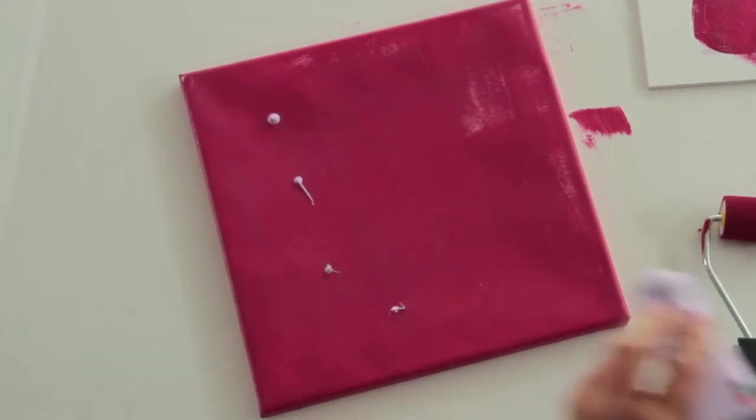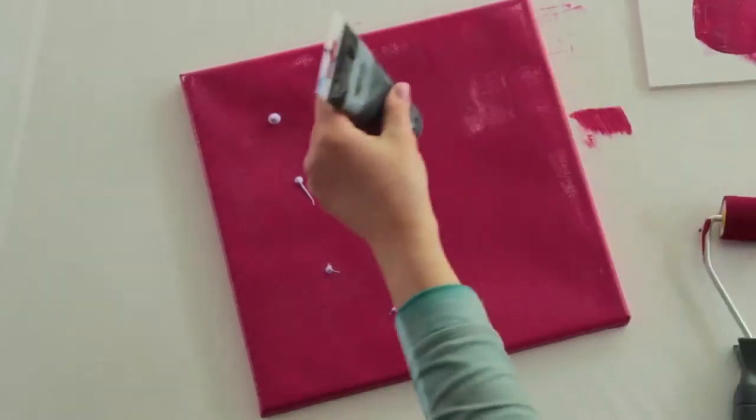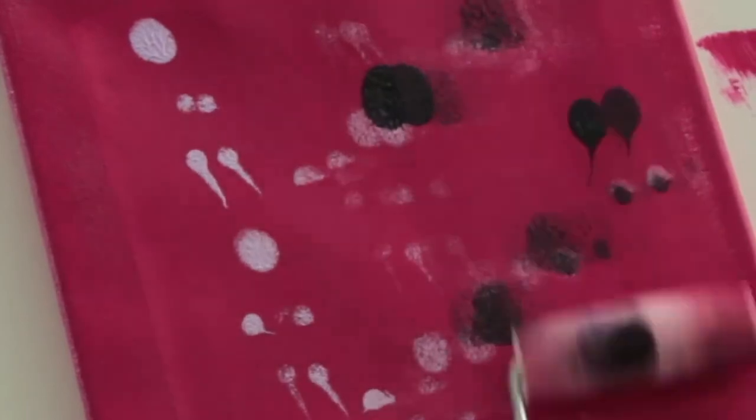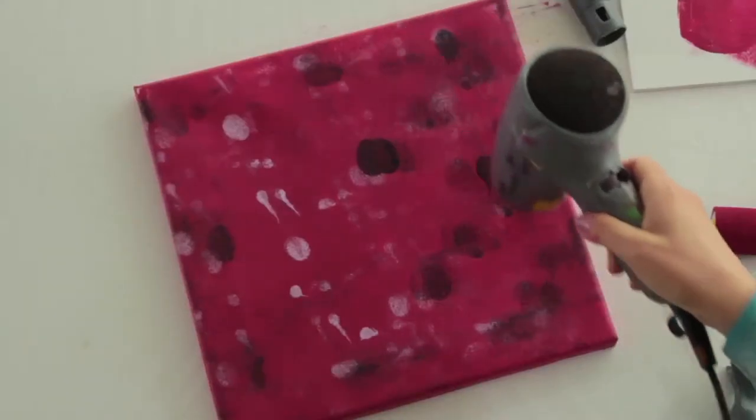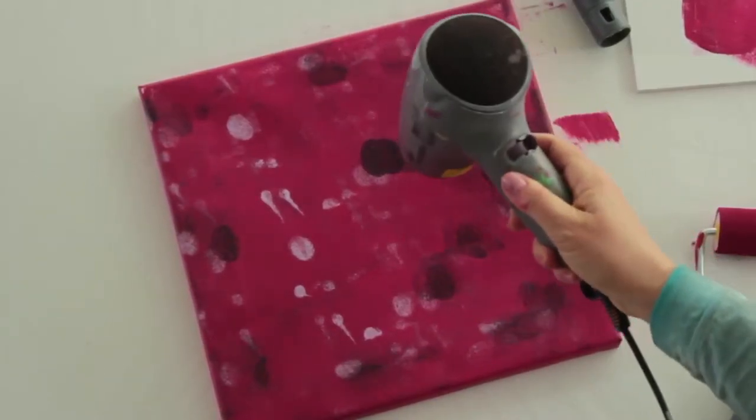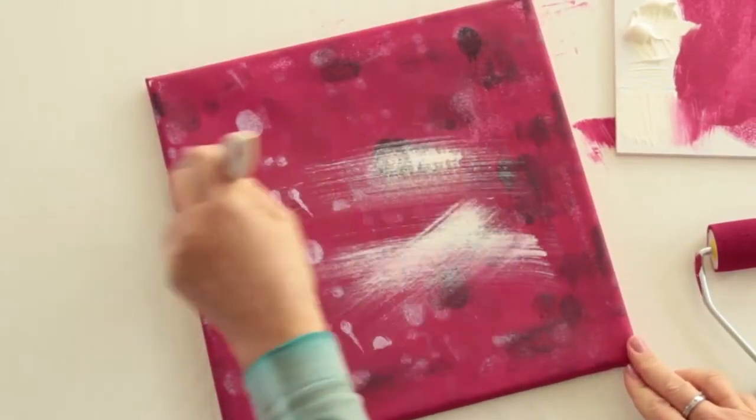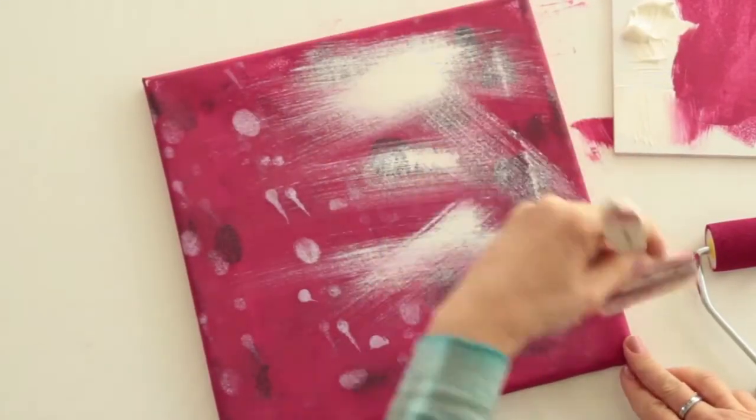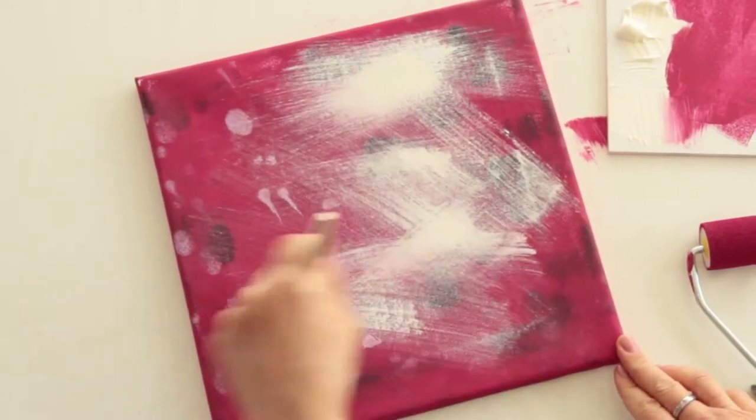Then spread two or more colors on the canvas frame and roll over with the paint roller. Dry the paint briefly with the hair dryer. Spread the white acrylic paint unevenly with a white bristle brush and then blow dry again.